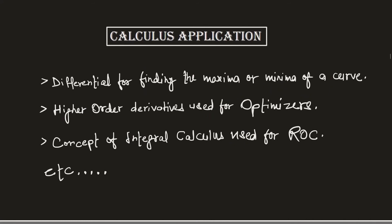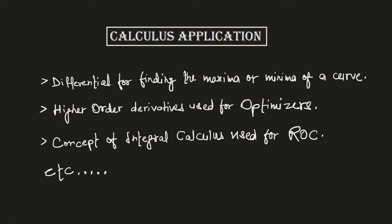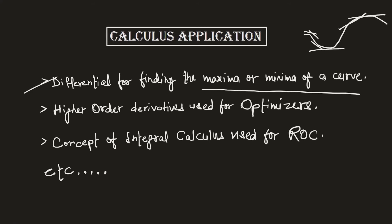Now let's quickly talk about applications. Differentials are heavily used for finding the maxima or minima of a curve. If you keep finding the derivative at different points on a curve, all these slopes — represented as m — have some value at different points. The point where m has the lowest value, say zero, is called the minima, and the point where m has the highest value could be considered the maxima.